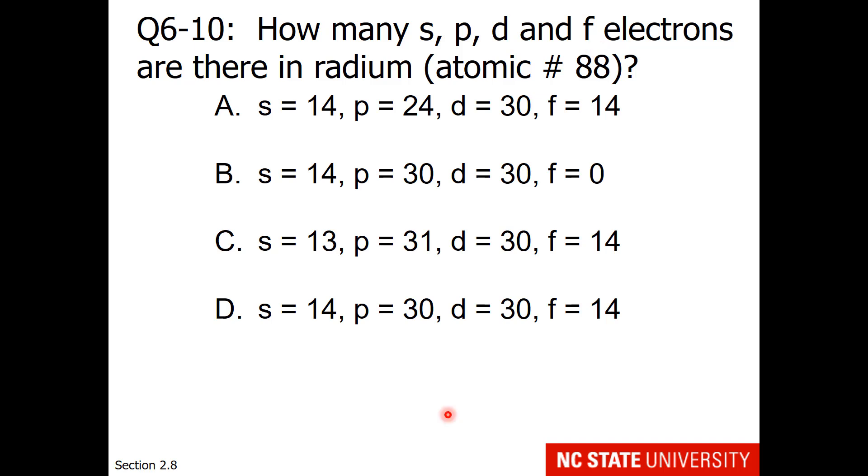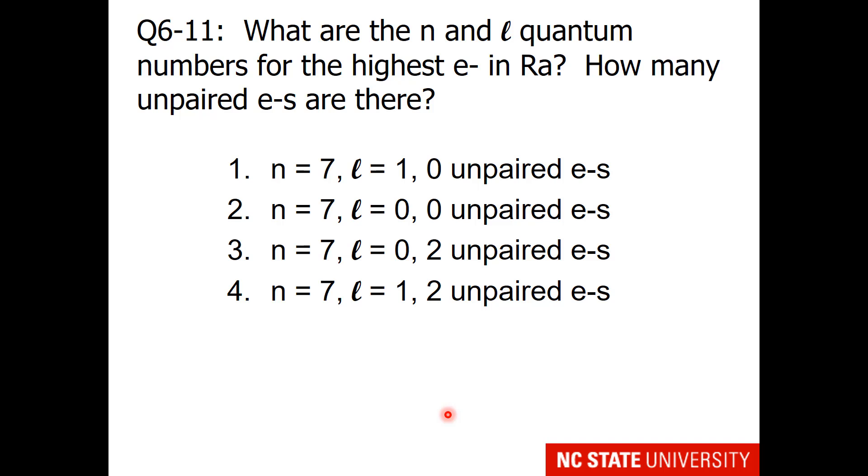So I hope you are looking at your periodic table and ready to answer how many S, P, D, and F electrons are there in radium. This is atomic number 88. What are the N and L quantum numbers for the highest energy electron in radium? This would of course be in the ground state. And how many unpaired electrons are there?